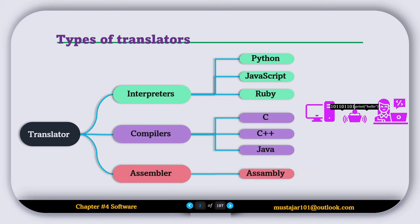In this illustration, you can see a list of languages that use interpreters, compilers, and assemblers. For example, Python, JavaScript, and Ruby use interpreters. C, C++, and Java use compilers. While assembly language uses the assembler to convert the code to machine code.